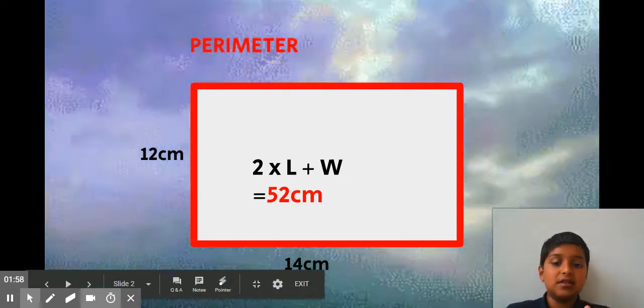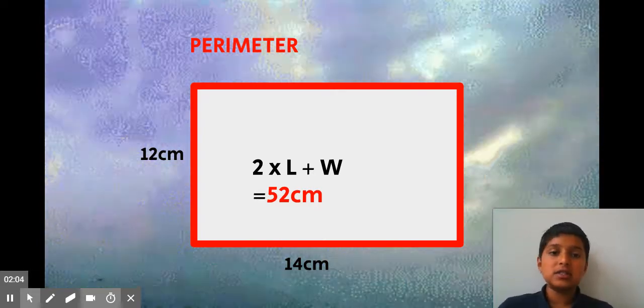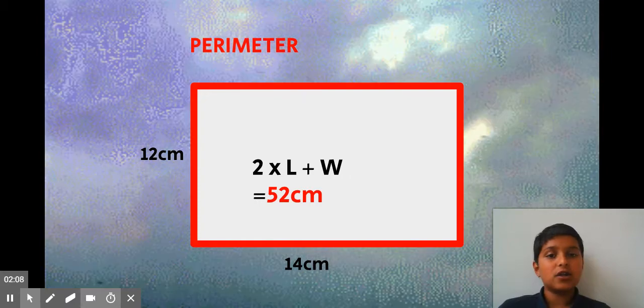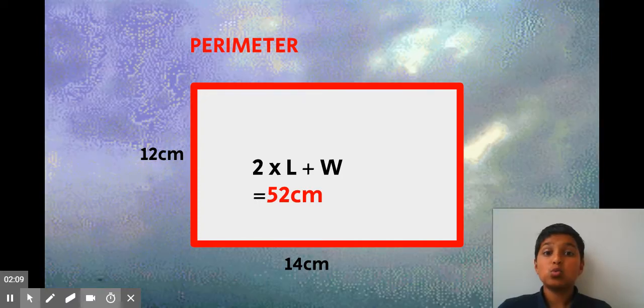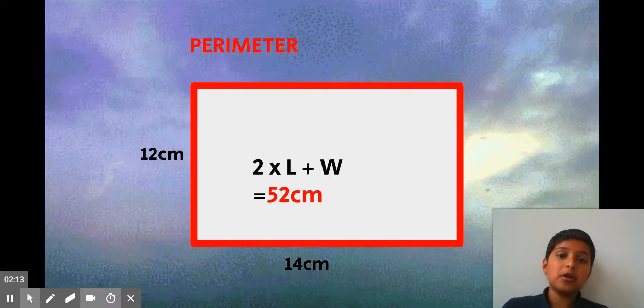problem. So once again, the formula is 2 times length plus width, or another way: length plus width times 2. That's how to find the perimeter of a rectangle. Now let's find the area. Suppose we have a rectangle